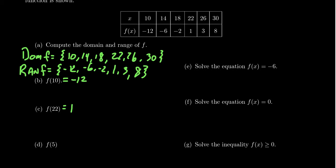So look at this one right here, f of 5. What is f of 5? Well, if we look along the table, it's like 10, 14, 18, 22, 26, 30. There's no 5, right?